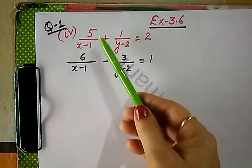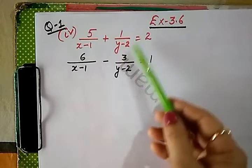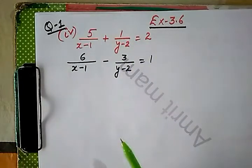Hamare paas kya equations diye hain? It is 5 upon x minus 1 plus 1 upon y minus 2 is equal to 2, and 6 upon x minus 1 minus 3 by y minus 2 is equal to 1. We have to solve this.